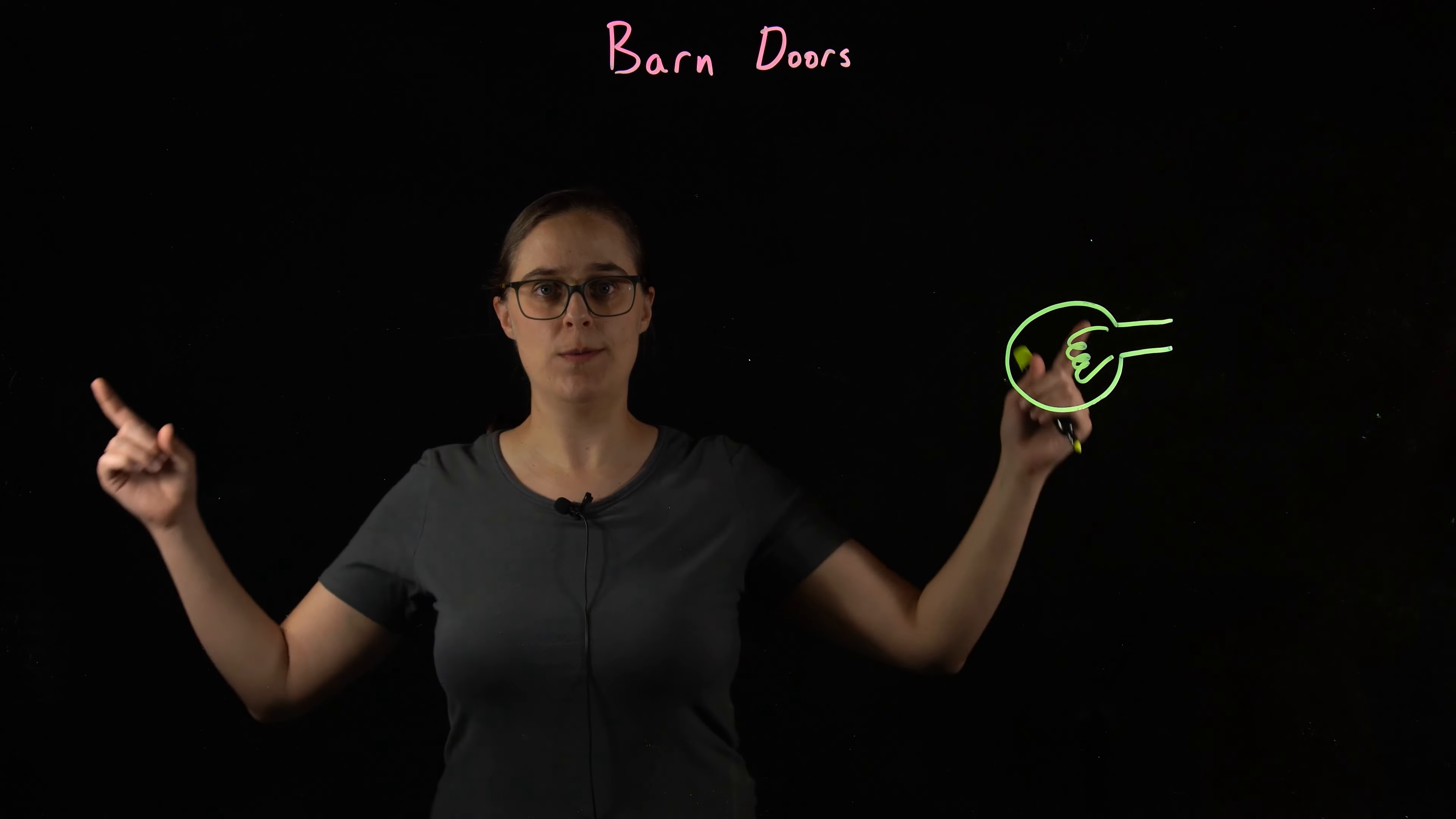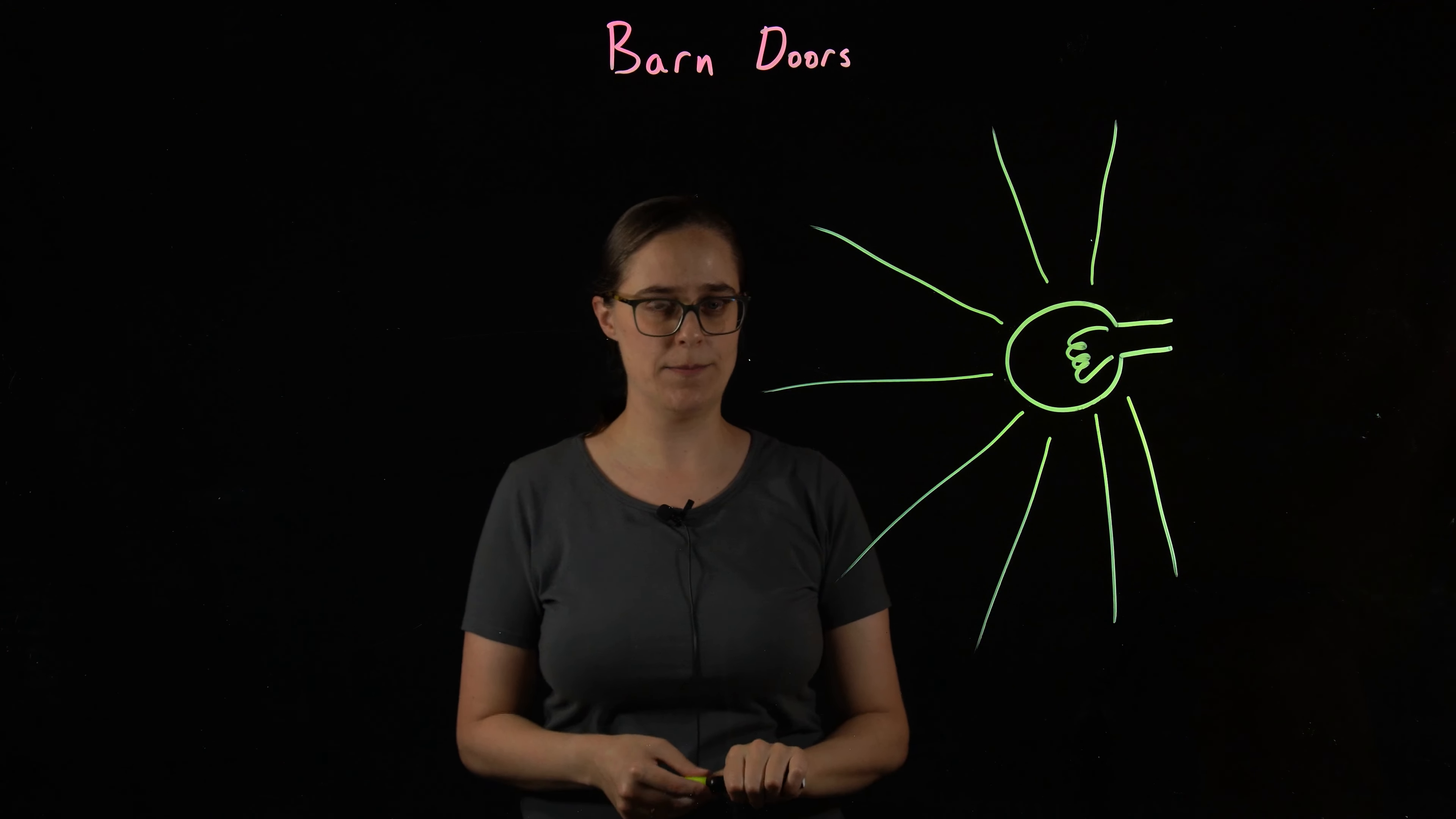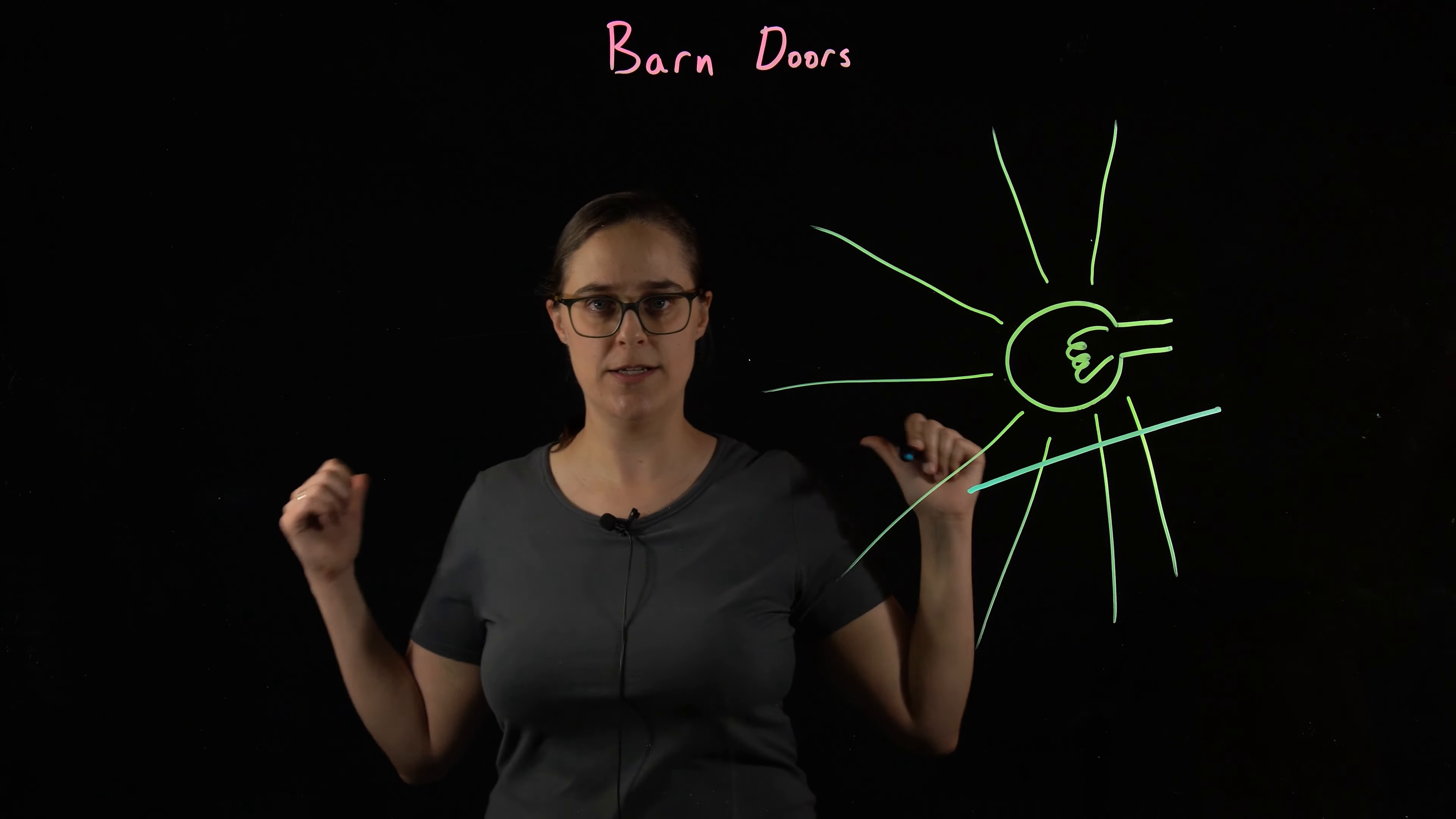Another upgrade that I would like to get would be barn doors for these two lights at the side that illuminate me. So, right now they're just light bulbs. And the problem with this is that their light shines in all sorts of different directions. Now, I want my backdrop to look black. Some of this light is hitting the backdrop. That means that I had to change settings on my camera to make everything look darker so that the backdrop could look black. Barn door would just be a flap that prevents light from going back.